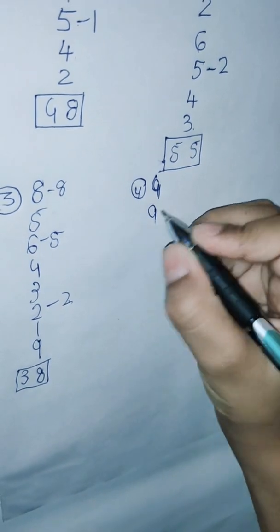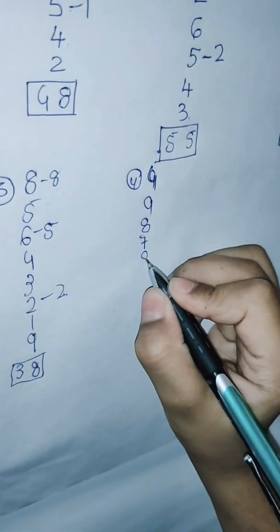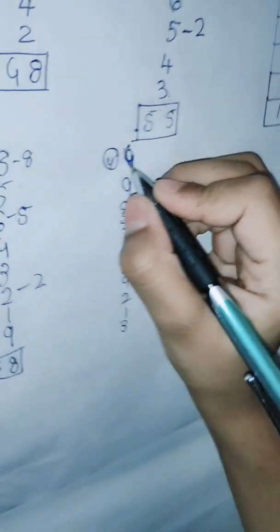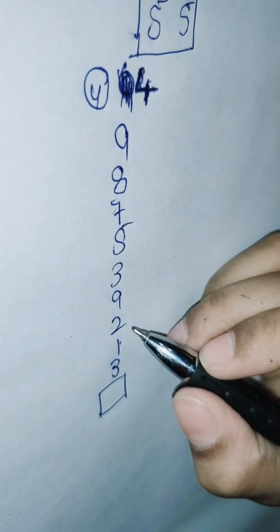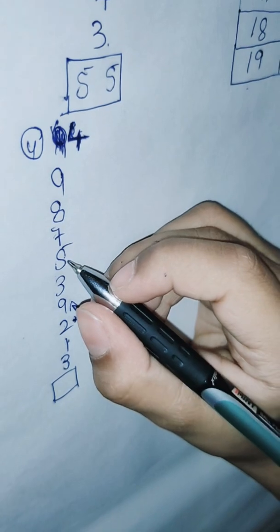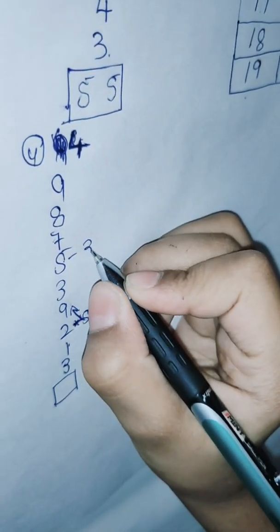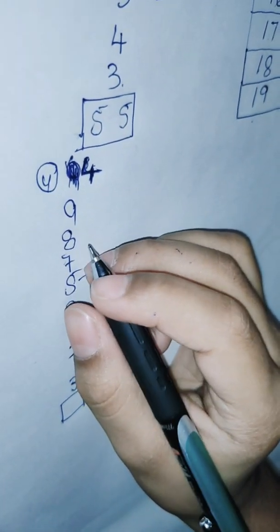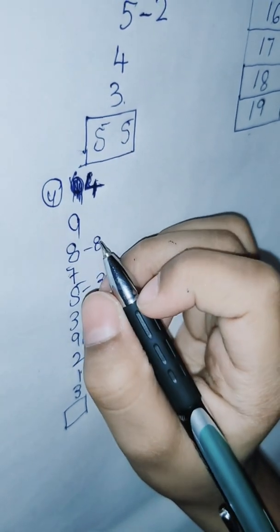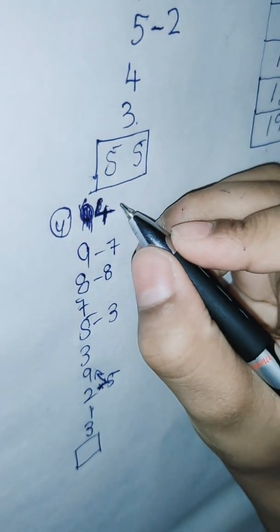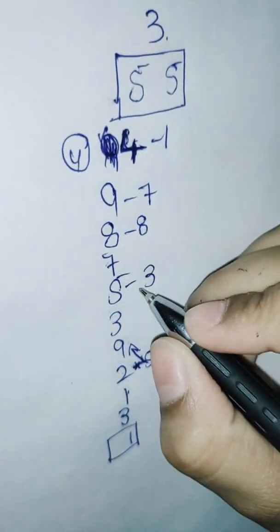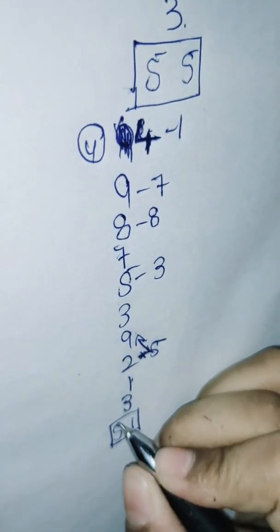The fourth sum: 4, 4, 4, 4, 9, 8, 7, 5, 3, 9, 2, 1, 3. 3 plus 1 equals 4. 4 plus 2 equals 6. 6 plus 9 equals 15. 15 plus 3 equals 8. 5 plus 3 equals 8. 8 plus 5 equals 13. 3 plus 7 equals 10. 10 plus 8 equals 18. 8 plus 9 equals 17. 7 plus 4 equals level. 1 right here. And count the dashes: 1, 2, 3, 4, 5. The sum is 51.